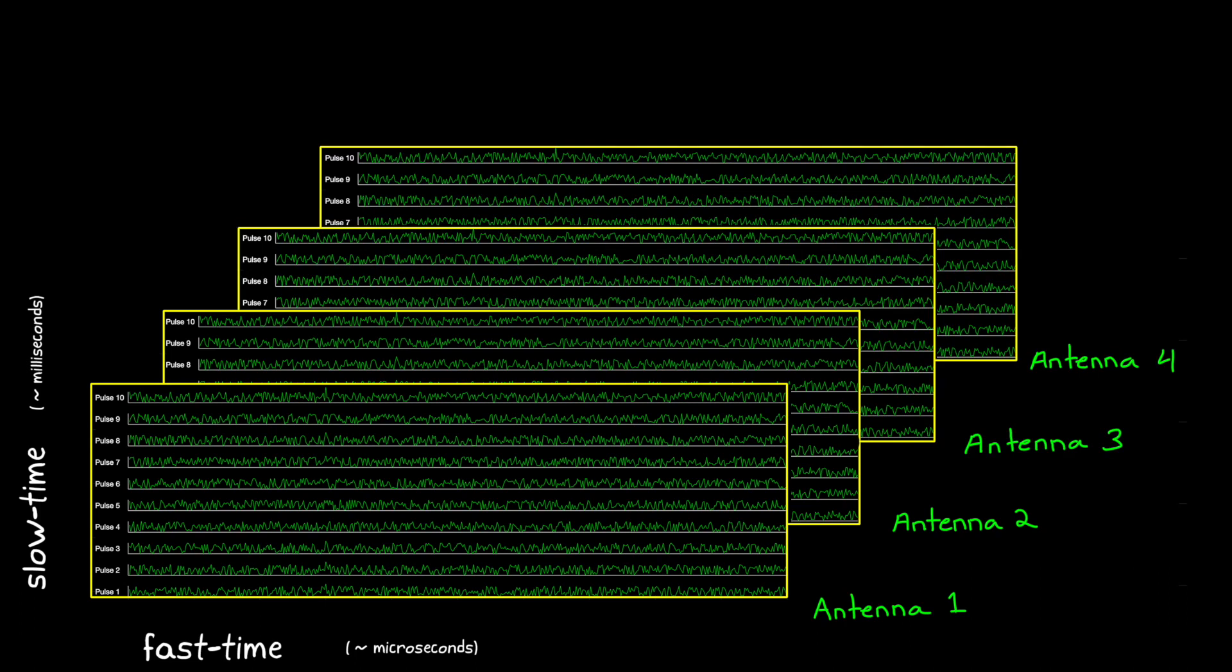And what we end up with is referred to as the data cube. Three axes of information that we can use to determine range, radial velocity, and direction. And we're going to talk more about the data cube in the next video on phased array antennas.